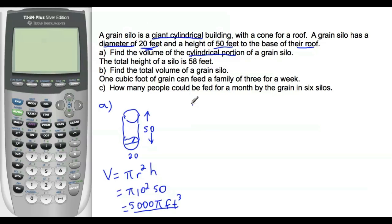If I want to find the total volume of a grain silo, then I'm looking for the entire thing, and I need to take into account that the total height is 58. So now, I've got the cone on top. I did this, but I need this top part, this cone. It also has a diameter of 20 and a radius of 10, but the whole thing is 58, which means that the cone itself is 8.